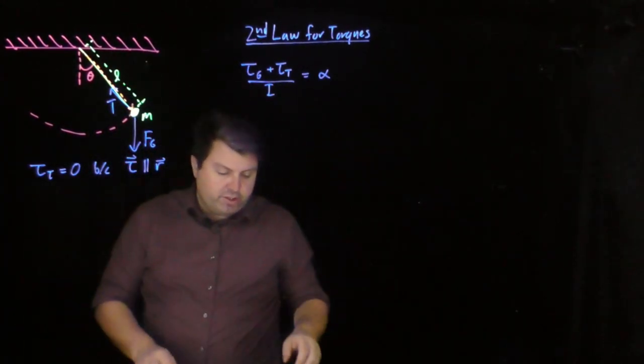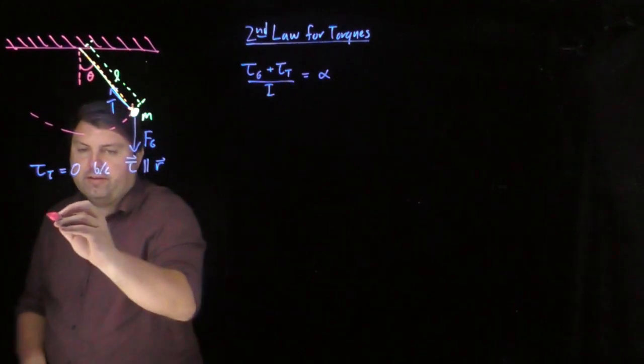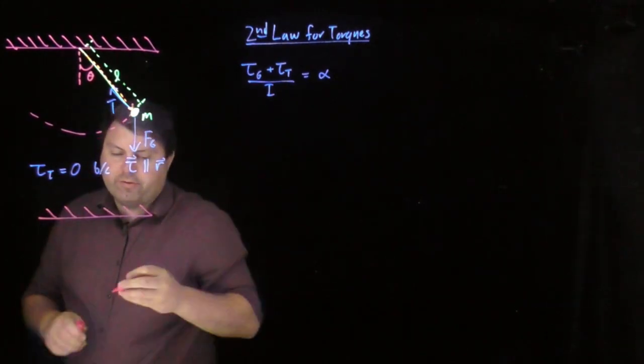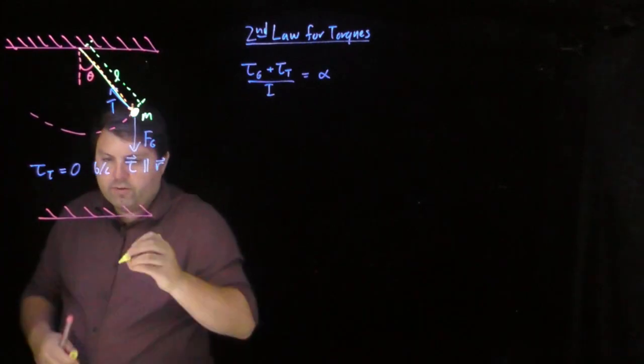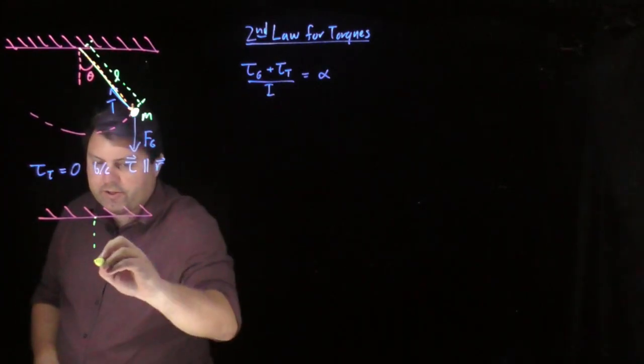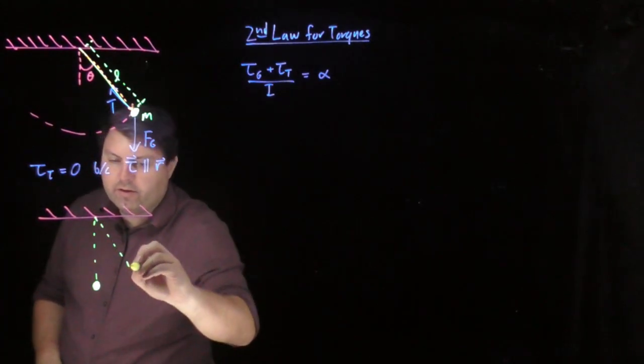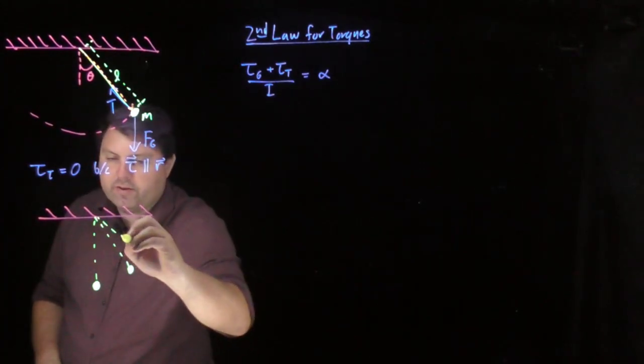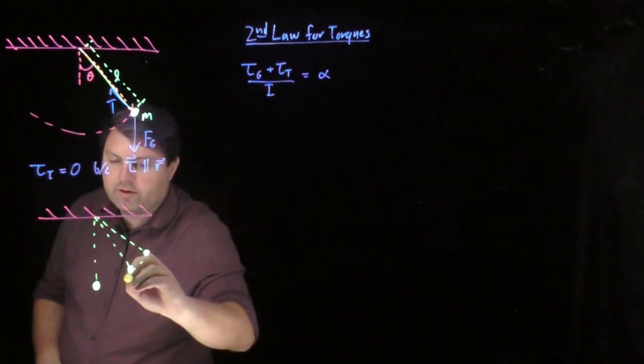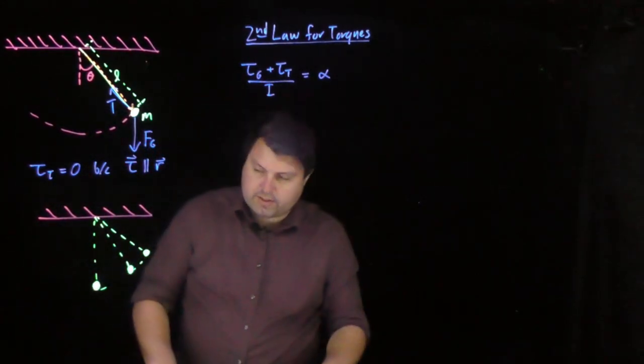So let's look just at our force of gravity then. Now that we don't have to worry about tension, we can think of it from a couple different directions. Here we would have perfectly vertical, and then a couple of angles further out describing this line.